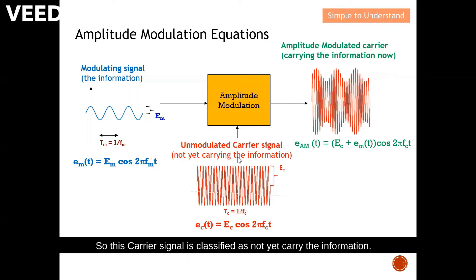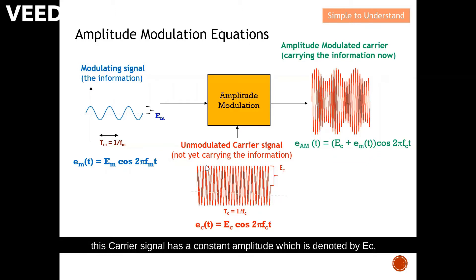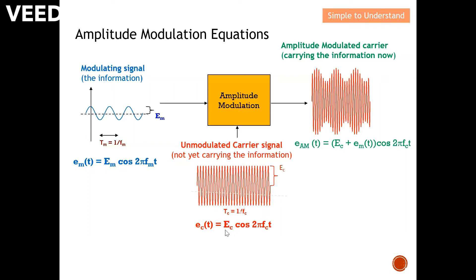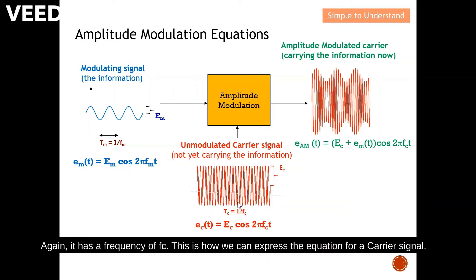Now let's move on to the carrier signal. This carrier signal is classified as not yet carrying information — it is an unmodulated carrier signal. From the diagram you can see that the carrier signal has a constant amplitude denoted as ec, and a frequency of fc. This is how we express the equation for the carrier signal.